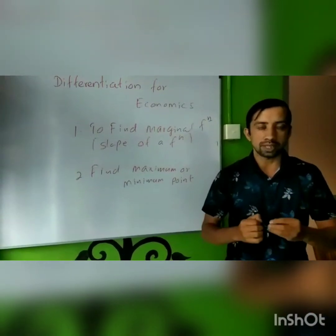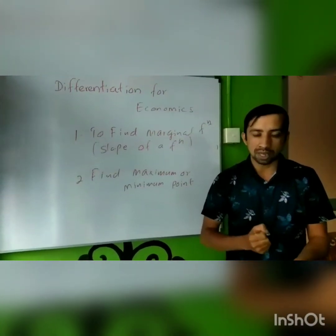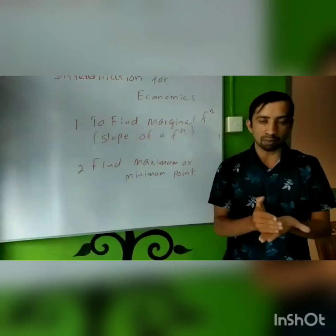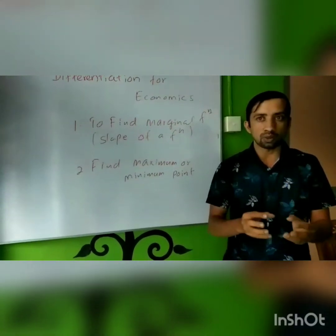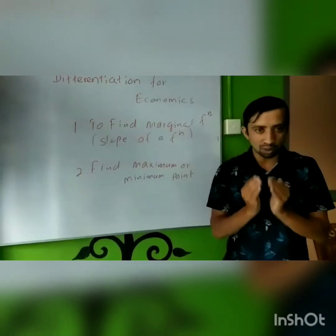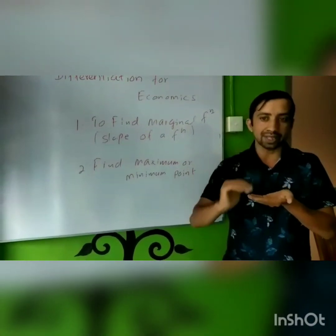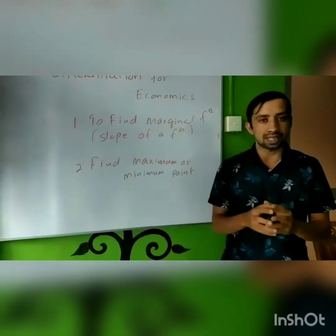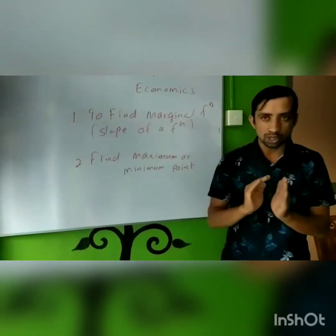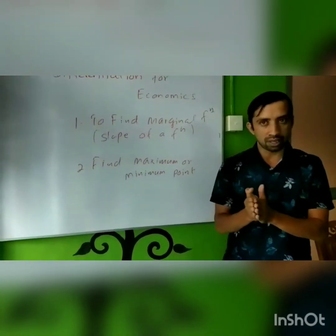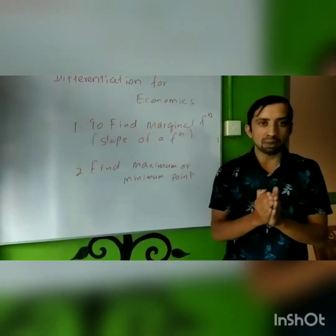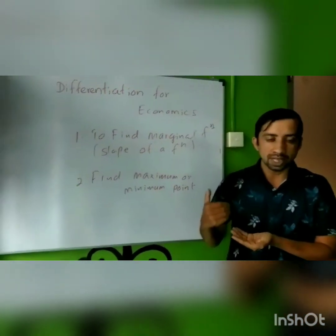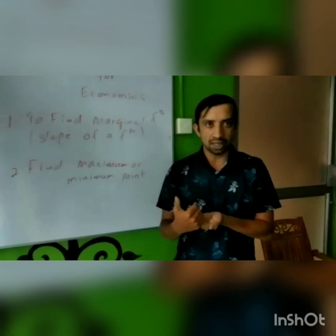For example, when a firm is attempting to maximize profit, they need to understand at which quantity they reach the maximum level of profit. On the other side, when a firm wants to find the minimum possible input to reach a certain level of output, differentiation is important because the first derivative shows the maximum or minimum point. When we need to confirm whether it is a maximum or minimum, the first derivative is not enough — we have to use the second derivative and make a decision based on its value.